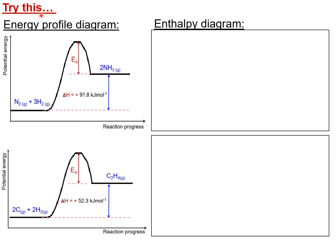Try drawing the enthalpy diagram for the reaction where N₂ + 3H₂ gives 2NH₃. Also try this reaction: 2C + 2H₂ gives C₂H₄. Based on the energy profile diagrams provided, translate them into enthalpy diagram form. To know whether the enthalpy diagram is endothermic or exothermic, look at the enthalpy change shown in the energy profile diagram.